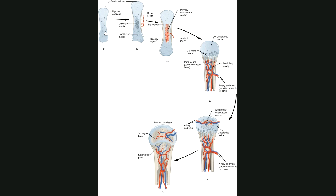So step one, we build this really big cartilage model made out of hyaline cartilage to model our bone. As this model starts to get bigger, the cells in the very middle of that model start to calcify. Calcify basically means they're grabbing calcium and putting it around themselves — kind of like a bad attempt at trying to build bone, since there's so much calcium in bone.